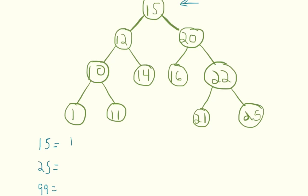So we start out at 15—that's one. Then we realize that 25 is bigger than 15, so we go to the right-hand side. Here we compare: is 25 bigger or smaller than 20? We know it's bigger, so we look to the right node again. So far we've taken two steps.